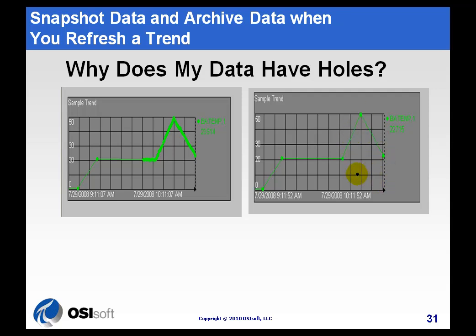So this is our introduction, and we're going to look at the details of both of our tests: the exception test that produces these snapshot values at high resolution that you see right here, and then the compression test that reduces those just to the values that are required in order to store the essence of that trend on disk.